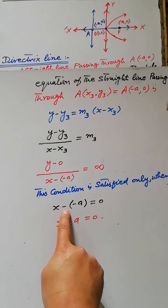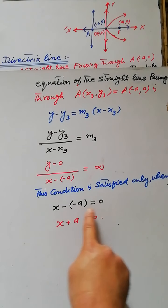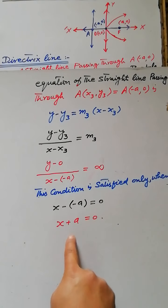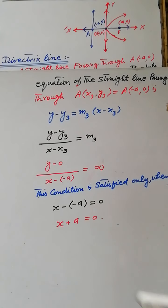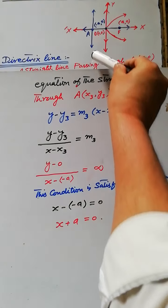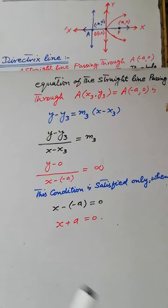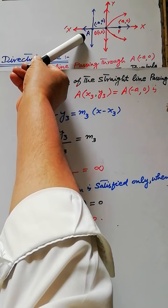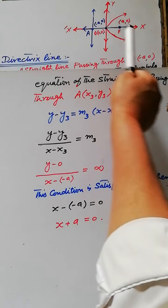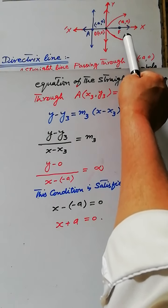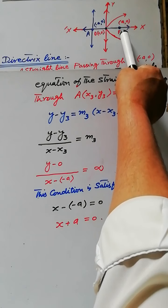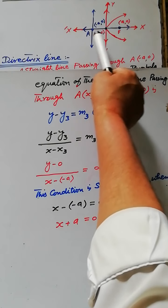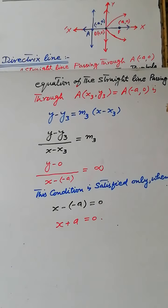Therefore x + a = 0 is the equation of the directrix of the parabola passing through point A, whose focus and directrix is on the x-axis.